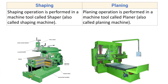Shaping operation is performed on a machine tool called a shaper, also called a shaping machine. Planing operation is performed on a machine tool called a planer, also called a planing machine.